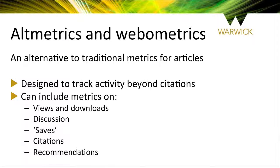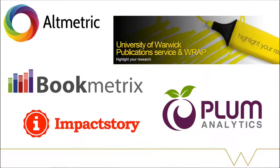Altmetrics covers five broad areas of attention: whether an article has been viewed or downloaded; whether an article is discussed in journal comments, science blogs, Wikipedia and other social media; whether researchers save an article in scholarly bookmarking services like Mendeley; whether an article has been cited; and whether an article has been included in curated recommendation services such as F1000. There are a growing number of services that track Altmetrics — to find out more, please check out our earlier Bytewise video on Altmetrics. The link is in the description.